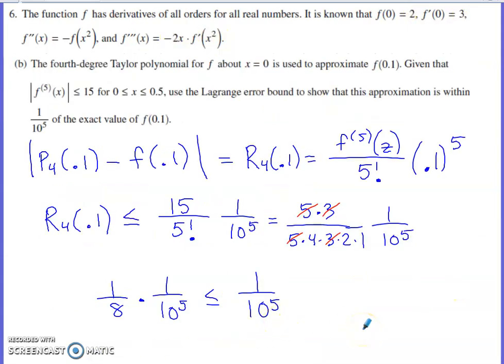Part B asks us to consider the fourth degree Taylor polynomial being used, that polynomial that we produced back in part A, being used to approximate f(0.1). They tell us that |f⁽⁵⁾(x)| ≤ 15 for 0 ≤ x ≤ 0.5. They ask us to use the Lagrange error bound to show that this approximation is within 1/10⁵ of the actual value of f(0.1).